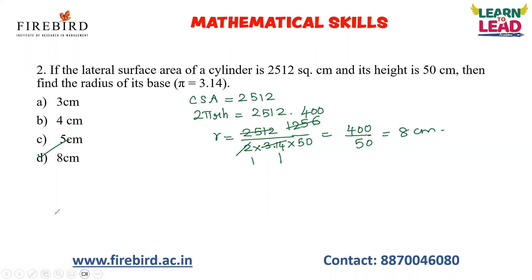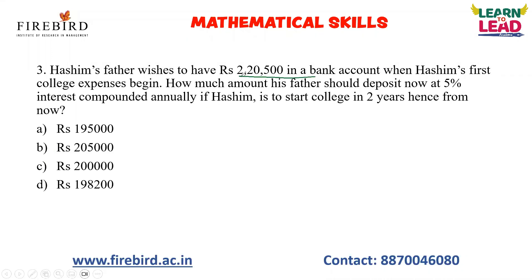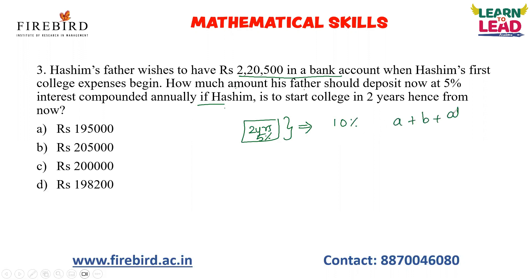A father wishes to have two lakh twenty thousand five hundred in a bank account when his son's college expenses begin. How much should the father deposit now at five percent interest compounded annually, if college starts in two years? This is a compound interest question. For compound interest, you use the formula A + B + (AB/100). So five plus five plus (5×5)/100 gives a total rate of 10.25 percent for two years.